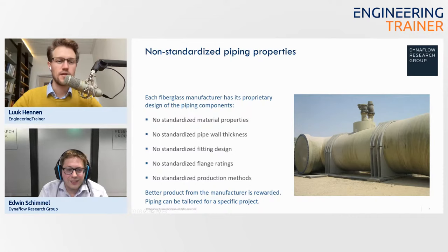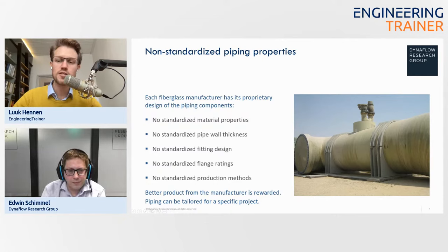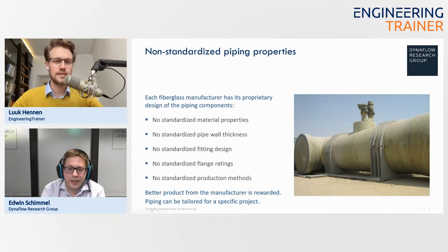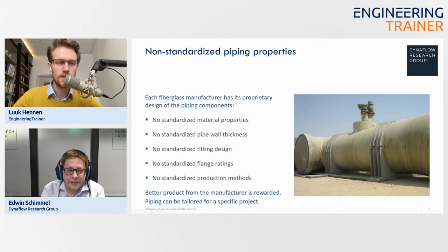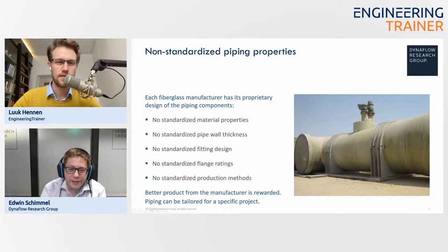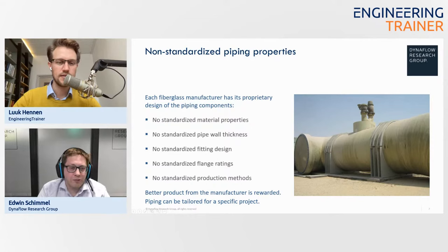Regarding neoprene pad thickness — it depends on diameter, but something like 5 millimeters or even as little as 3 millimeters is typically sufficient. It doesn't scale significantly with diameter; a standard thickness of a few millimeters will do. An added practical benefit is that it reduces the dimensional accuracy required of the support, since you have rubber in between anyway.